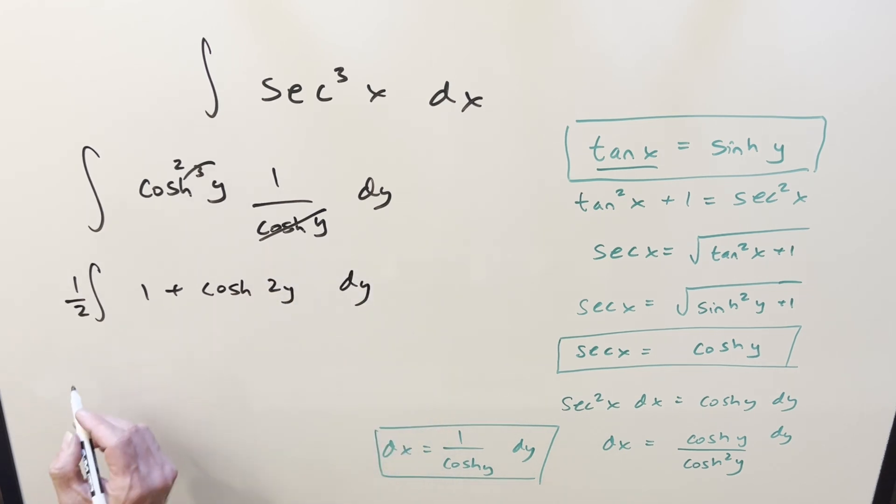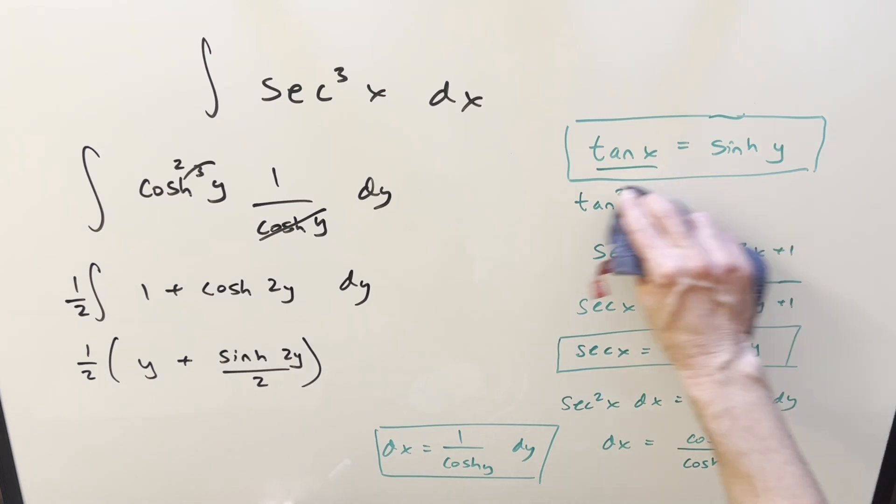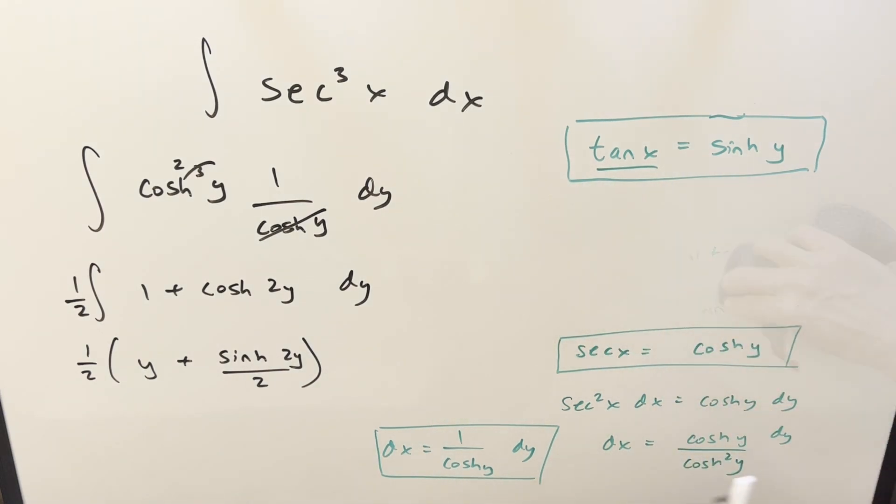We'll go ahead and integrate. What's going to happen? We're going to have one half in front. This is just going to be a y. This is going to be sinh of two y, but we need to bring a half out. Now from here, let's get our y value just using this first equation. I don't think we need any of this.